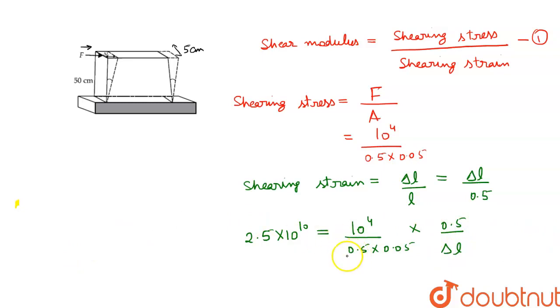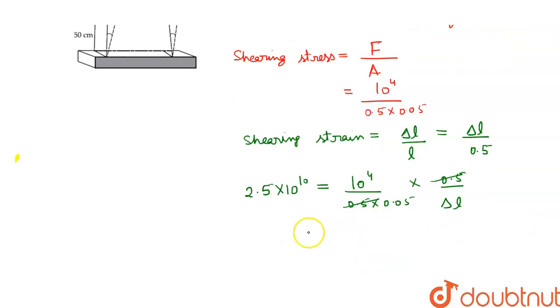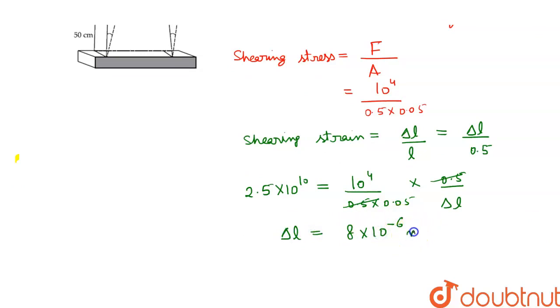After simplifying, we get delta L is equal to 8 into 10 raised to the power minus 6 meters.